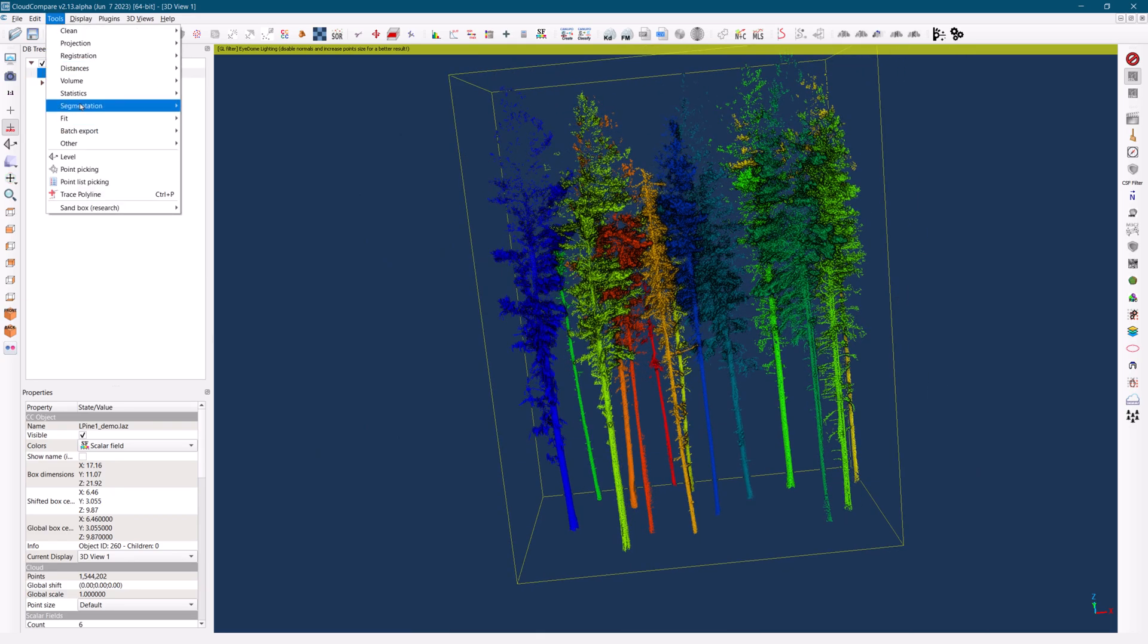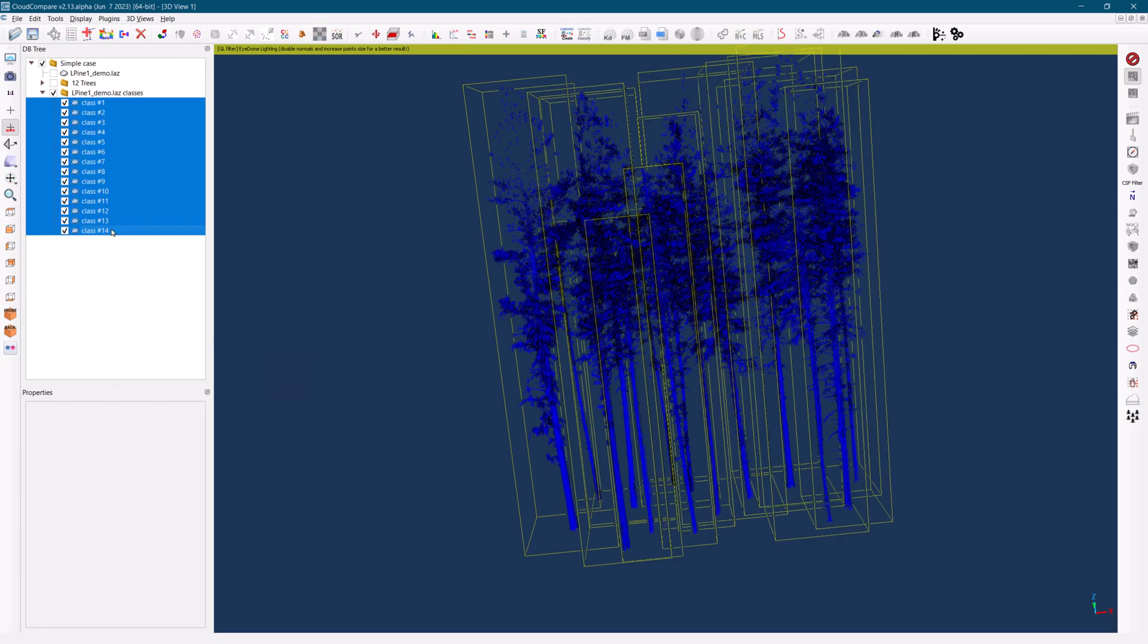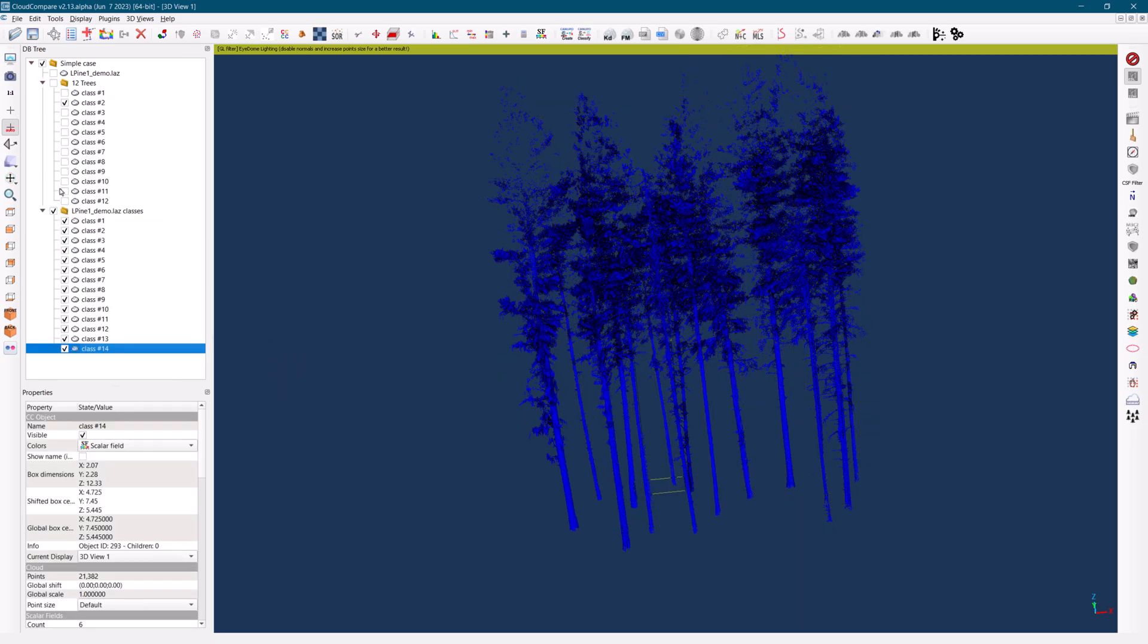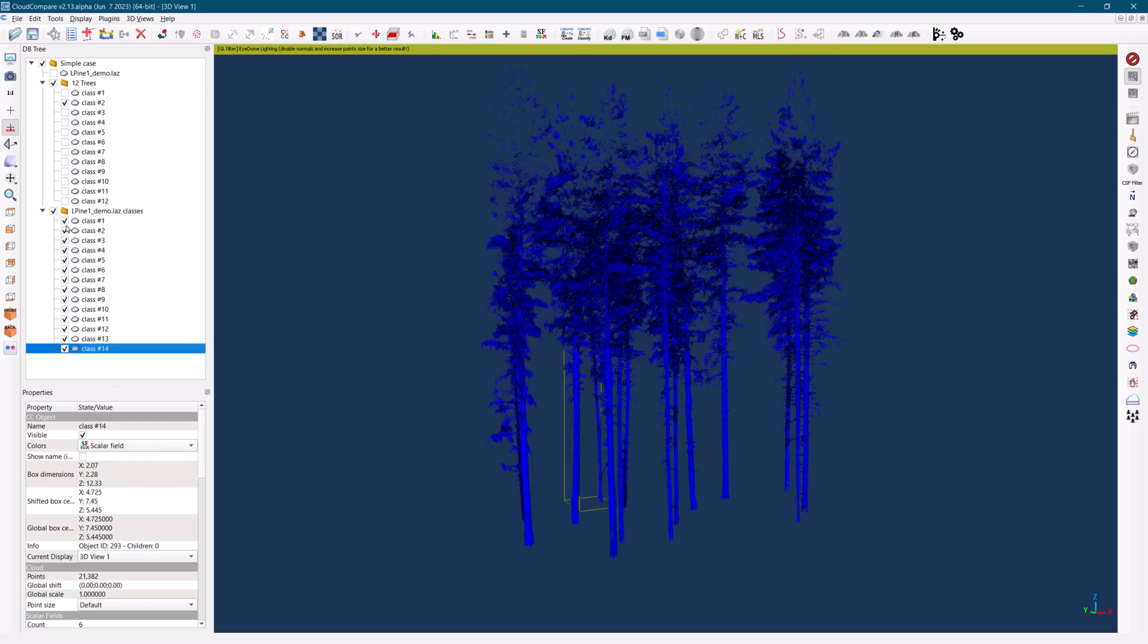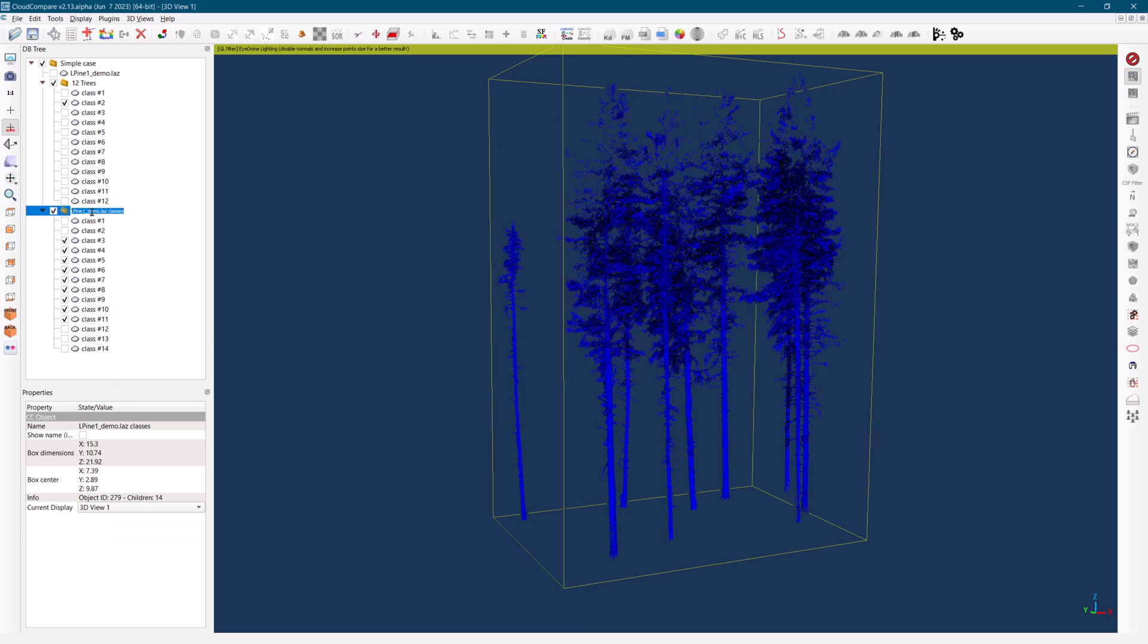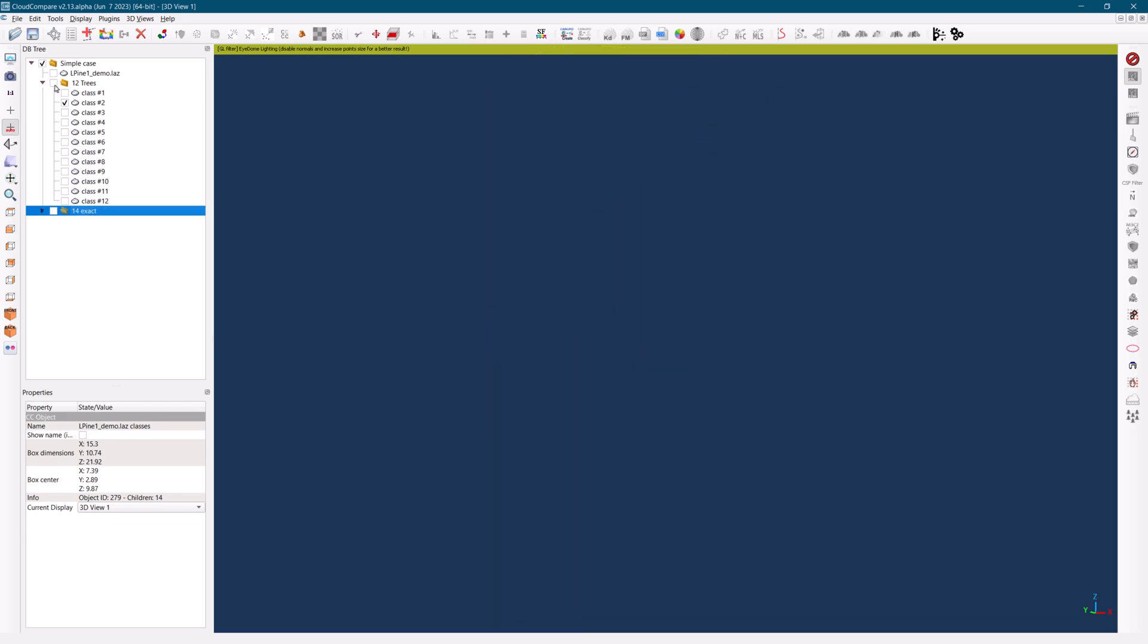To verify the results, we will once again split the final segments into integer values. And there we have it. We now have all 14 trees accurately isolated and beautifully displayed. This demonstrates the effectiveness of the TreeISO algorithm in individual tree isolation from terrestrial laser scanning data.